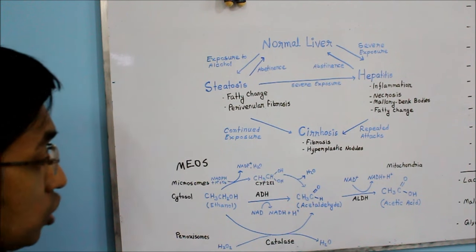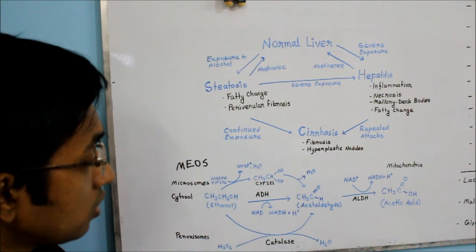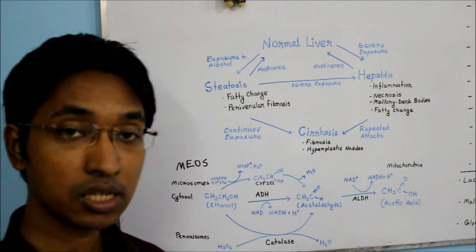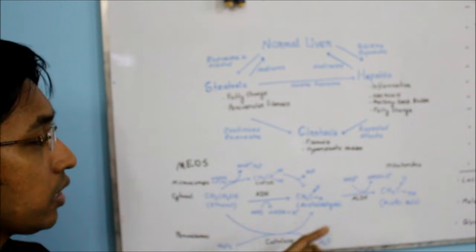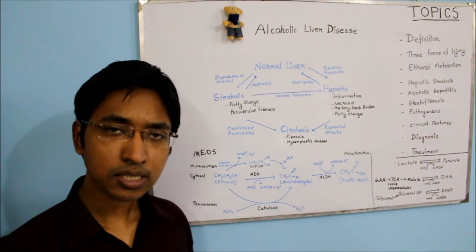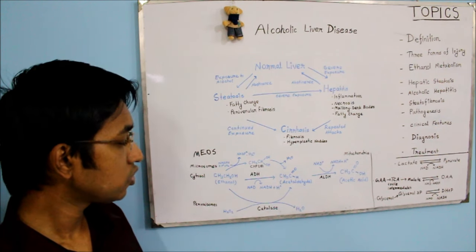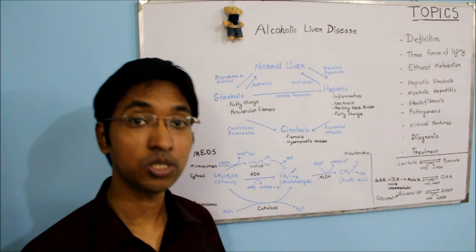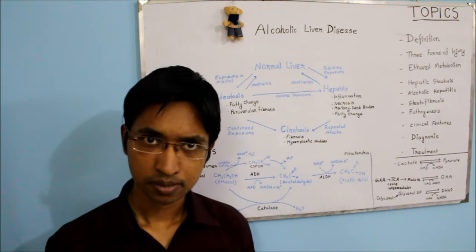After formation of acetaldehyde, it moves into the mitochondria of the hepatocyte. There, with the help of the enzyme aldehyde dehydrogenase (ALDH), acetaldehyde is again oxidized into acetic acid or acetate. Note that during this reaction, just like the previous reaction, nicotinamide adenine dinucleotide is again reduced. The amount of NADH is therefore increasing, and this increase will have some very important consequences.